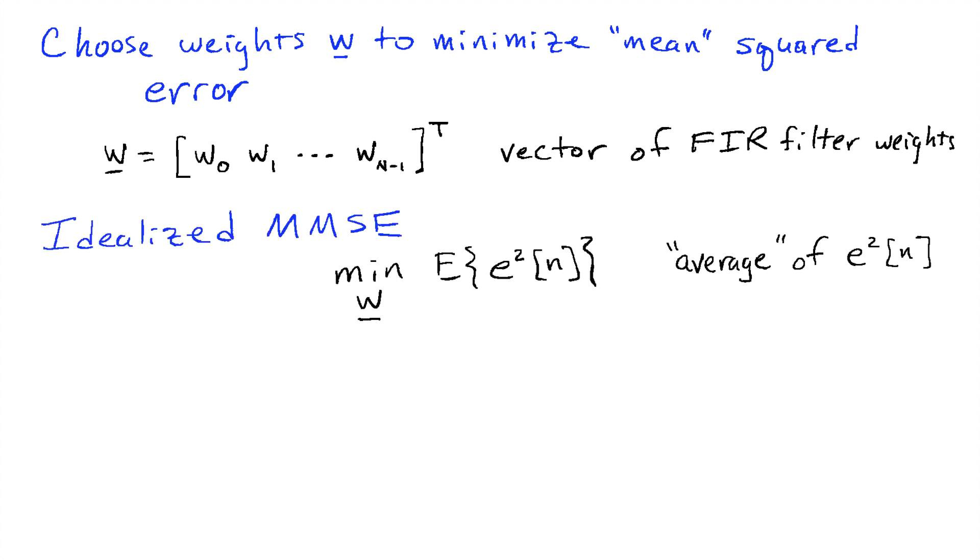And then if we look at the definition of what mean squared error that we want to minimize, in other words the minimum mean squared error, we can write that as the minimum over the filter coefficients. In other words, we're trying to find w to minimize the mean value of the squared error. So the mean here is the expected value, which is the way we define mean in our probability.